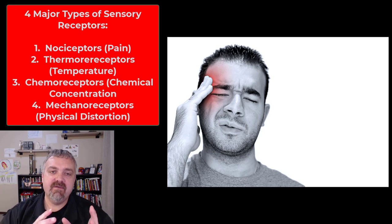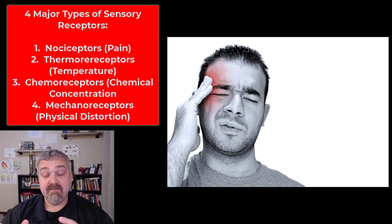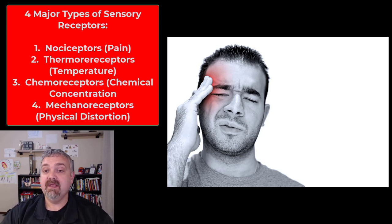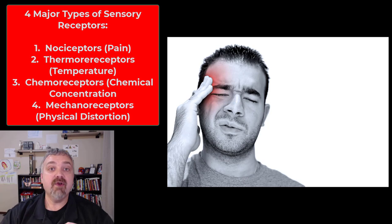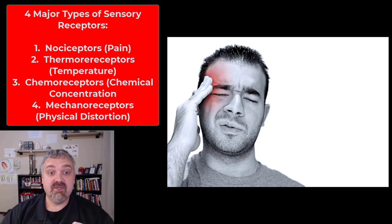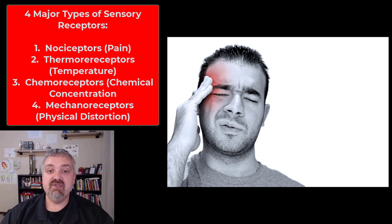Hey everybody, Dr. O here. In an earlier video we talked about general senses versus special senses. Now we're going to look at the general senses and classify them based on the type of stimulus that excites them and sends information to your central nervous system. We're going to look at nociceptors (pain receptors), thermoreceptors (temperature), chemoreceptors (chemical concentration), and mechanoreceptors (physical distortion of cell membranes). Let's jump in.